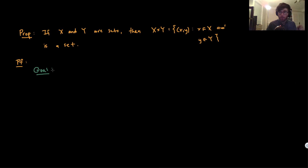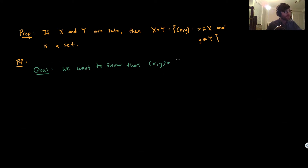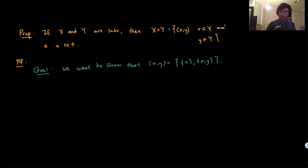Our goal is to show that the ordered pair—which we know is a set—is in some bigger set that we know exists. Recall that the ordered pair (x, y) by definition equals the set containing the set {x} and the set {x, y}. We want to show that these ordered pairs (x, y) are contained in some bigger set that we already know exists.